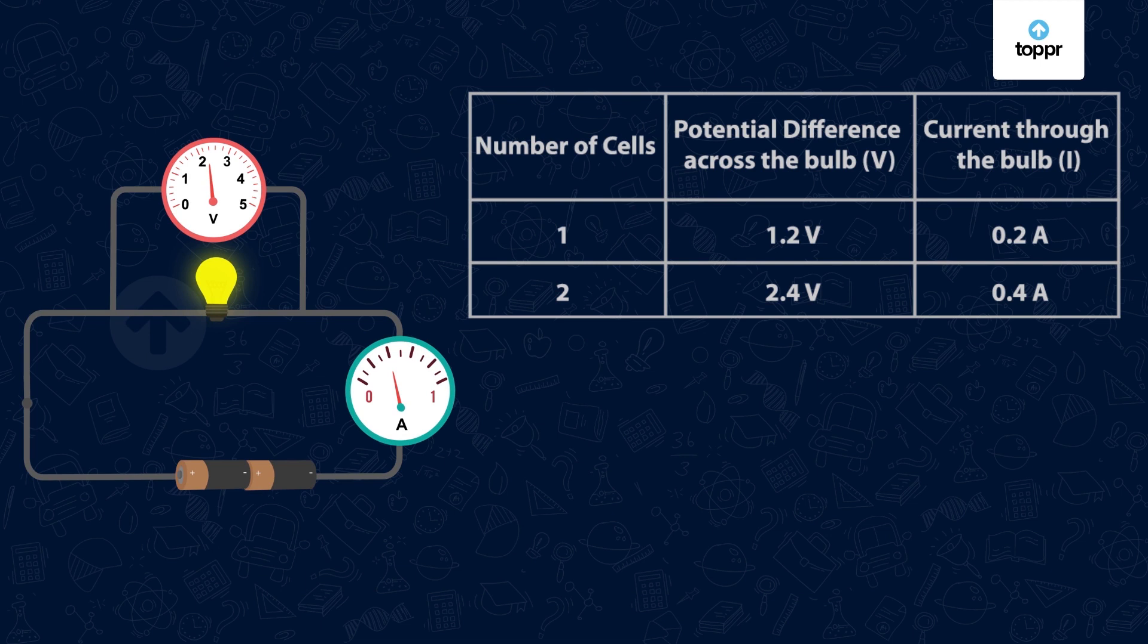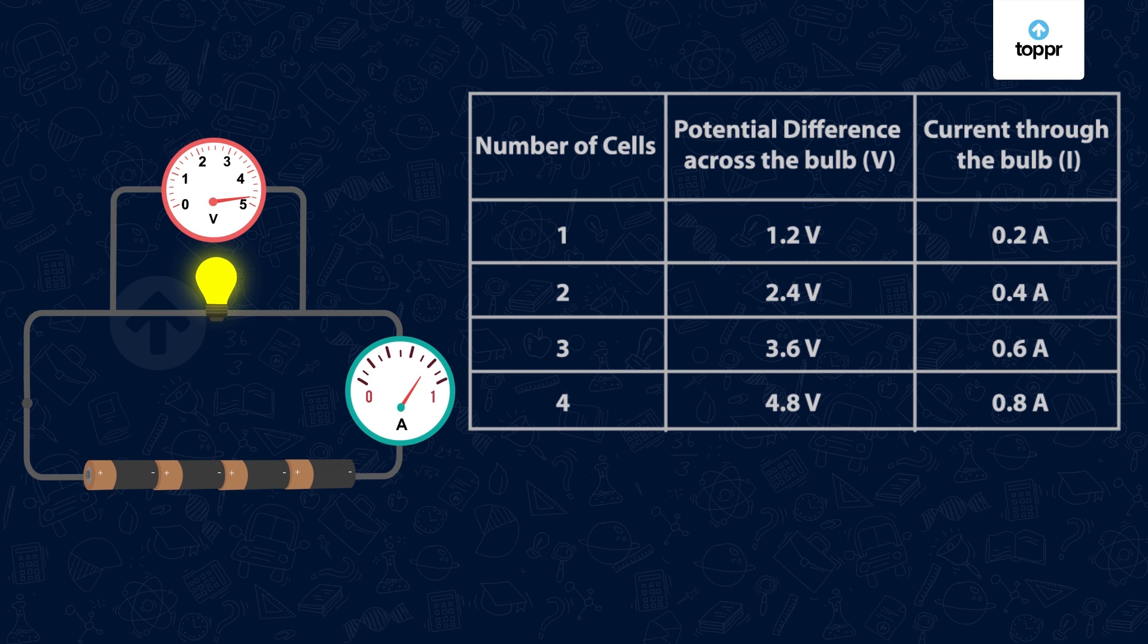If we repeat the steps using three cells, we get 3.6 volts and 0.6 ampere, and for four cells, we get 4.8 volts and 0.8 ampere.